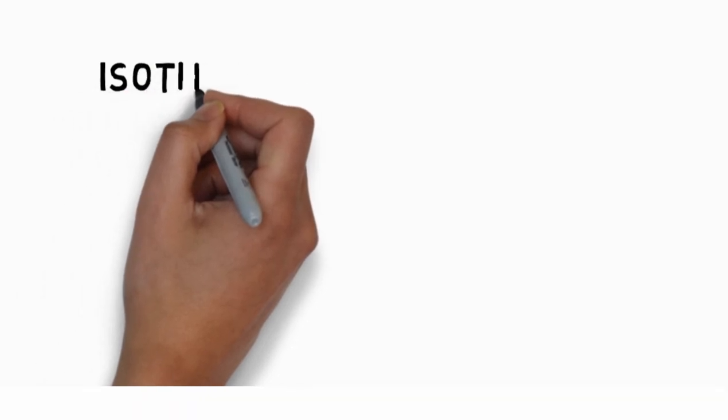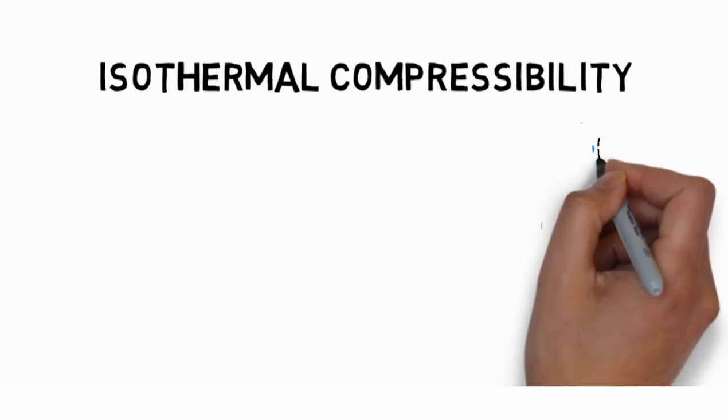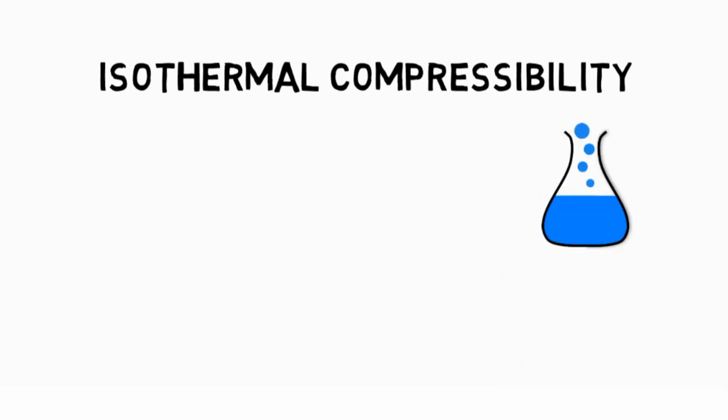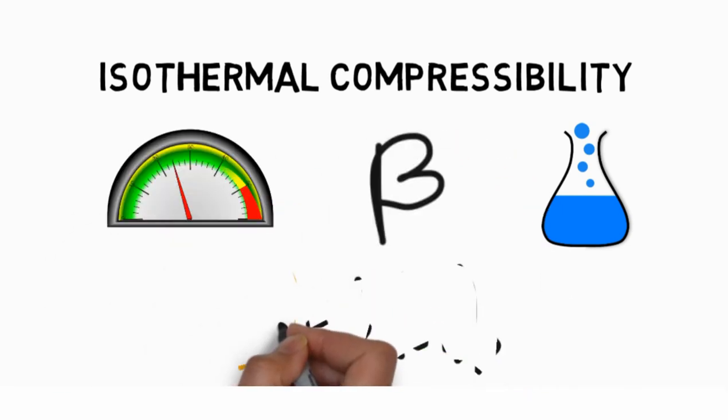Isothermal compressibility, also known as coefficient of compressibility or simply compressibility, is a measure of the relative volume change of a fluid or solid as a response to a pressure or mean stress change. It is denoted by beta.